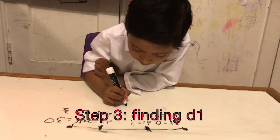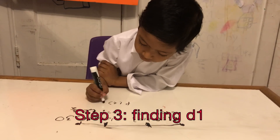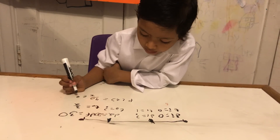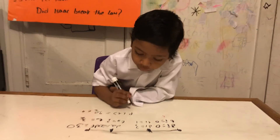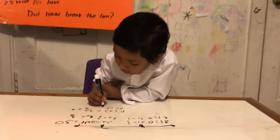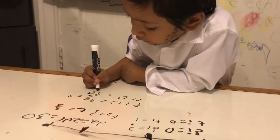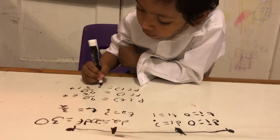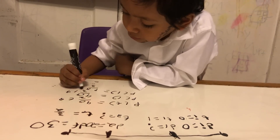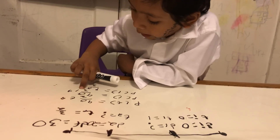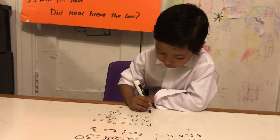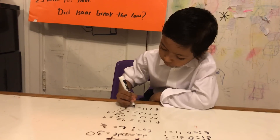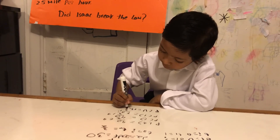P of T is equal to 40 over 3 T squared. This time we replace T with 1. So P of 1 is equal to 40 over 3 times 1 squared, because 1 times 1 equals 1. So P of 1 is equal to 40 over 3, which is approximately 13.3.